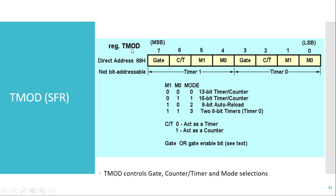TMOD is an 8-bit register. The upper 4 bits of the TMOD SFR are related to Timer 1, and the lower 4 bits are related to Timer 0. The MSB bit, that is the Gate bit, is used for controlling the starting or stopping of the timer using an external signal.